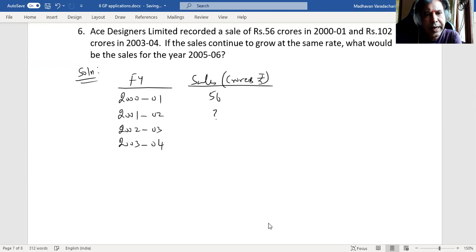Sales growth is always considered to be progressing geometrically, so we will definitely assume this as geometric progression. Let us consider this as term one, that means this will be term two, this will be term three, and this will be term four.